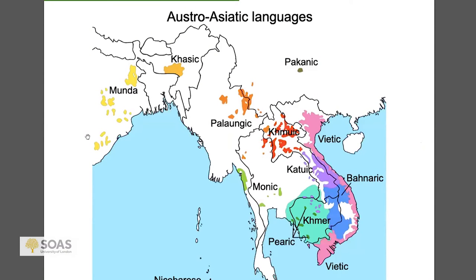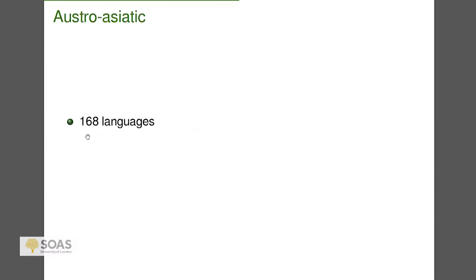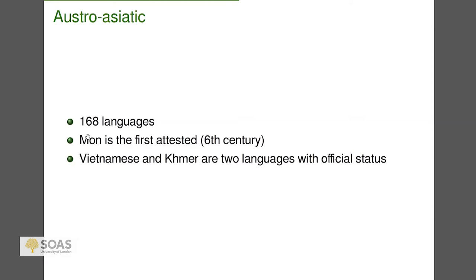Turning to Austro-Asiatic: looking at the map, it probably started in China — with the Pakanic branch still in China and very widely spread — and you have Munda and Khasi in India, Nicobarese in the Nicobar Islands. The famous languages are Vietnamese and Khmer. There are 168 Austro-Asiatic languages. The first attested is Mon, spoken in Mon State in Burma and parts of Thailand, attested from the sixth century. Vietnamese and Khmer are the two with national official status.